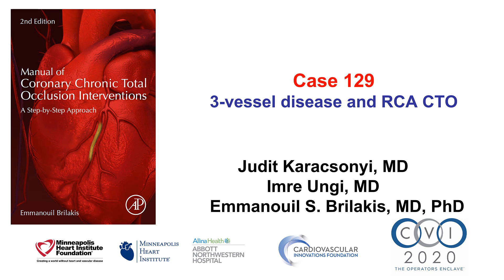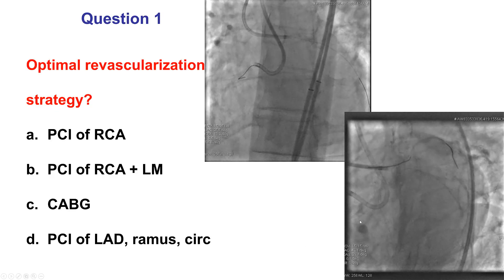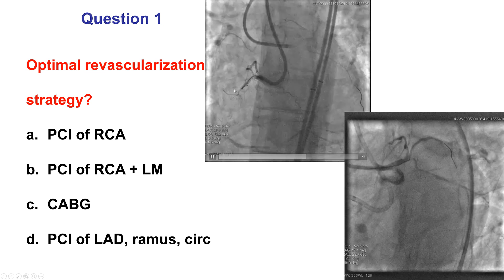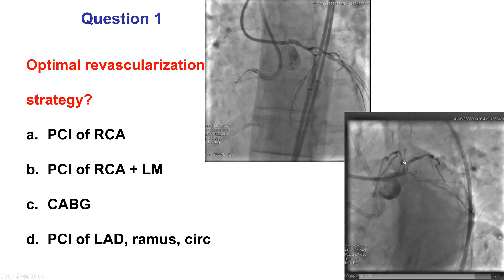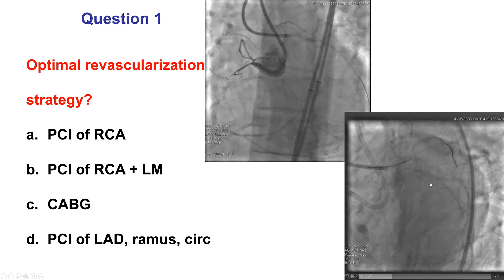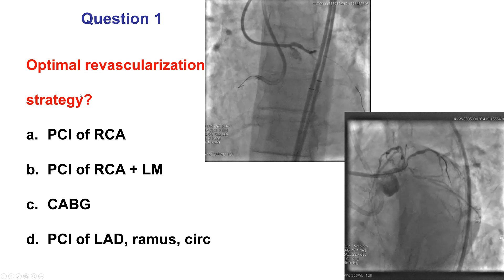This is a case of a patient with three-vessel coronary disease including a right coronary artery CTO. The patient was a young man who presented with stable angina even with low levels of exertion. He had normal ejection fraction and a positive stress test. On coronary angiogram, he has a CTO of the right coronary artery, but also significant disease on the left system with lesions in the proximal LAD, the ramus, and the circumflex. So severe three-vessel disease, and the question is what would be the optimal revascularization strategy.